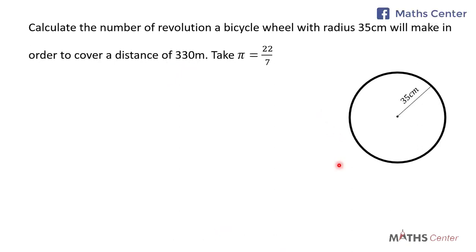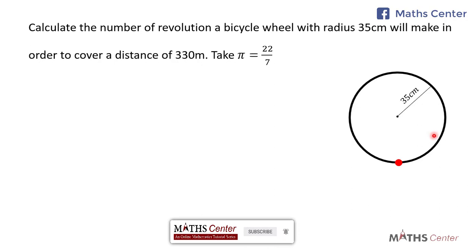The wheel of the bicycle will complete one revolution when it rolls over and returns to its original position. If this part of the wheel is on the ground and it rolls over and returns to its original position, it will cover the total distance around the wheel, which is the circumference. So when it completes one revolution, the total distance covered by the wheel equals the circumference of the wheel.